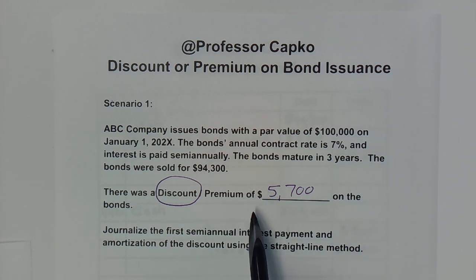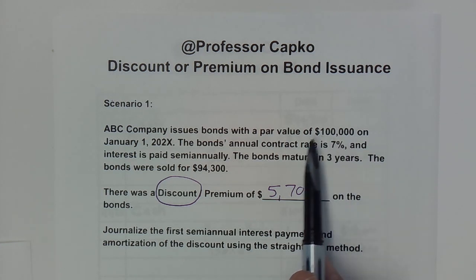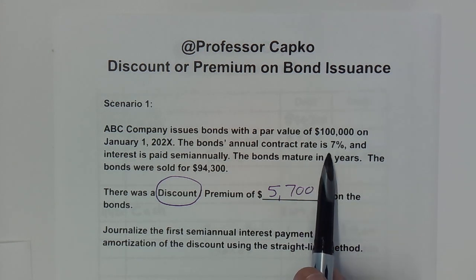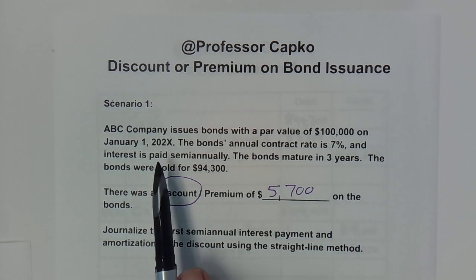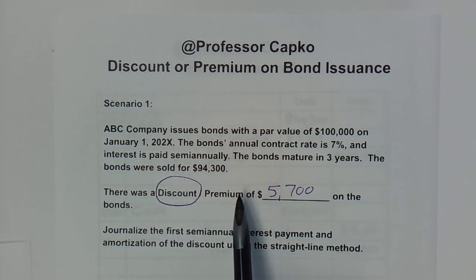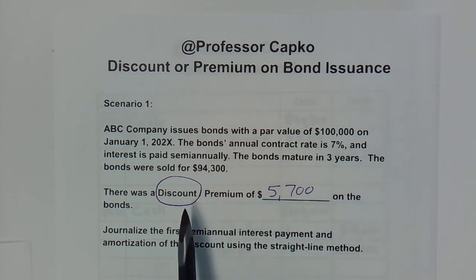In scenario one, the company sold bonds with a $100,000 par value, also known as face value. The annual contract rate, also known as the coupon rate, is 7%, and they were issued on January 1, 2020 for $94,300. So you can see there is a discount here of $5,700.